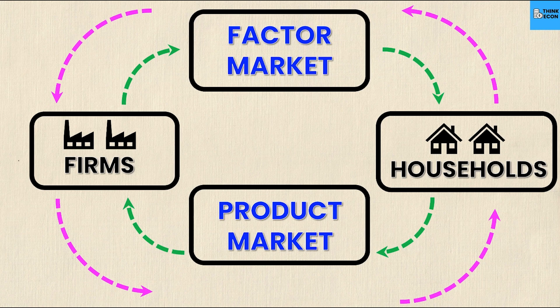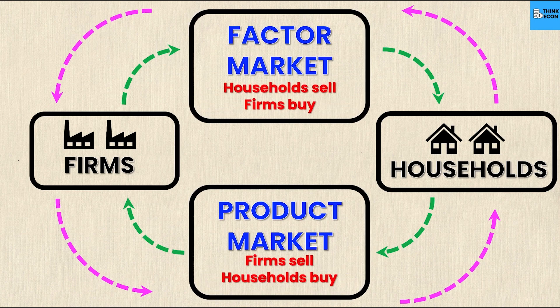In the circular flow diagram, you'll notice there's an arrow going in and out of each market — households give and take from both markets, and so do firms. The factor market is where households sell the factors of production to firms and firms buy the factors of production from households. The product market, on the other hand, is the goods and services that firms sell and households buy.